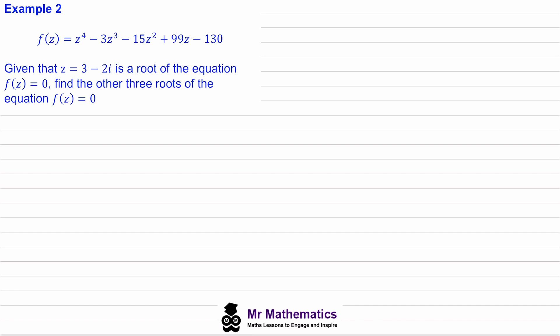Since roots occur in complex conjugate pairs, we know z1 equals three minus two i and z2 is the complex conjugate of z1, which is three plus two i. We can use these two roots to find a quadratic factor of the quartic equation.